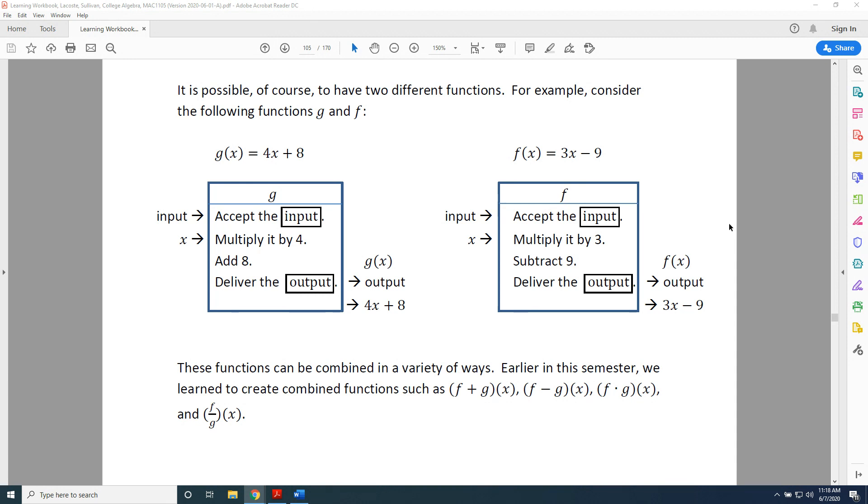It is possible, of course, to have two different functions. For example, consider the following functions g and f. g of x equals 4x plus 8. f of x equals 3x minus 9.